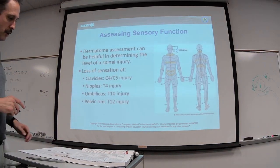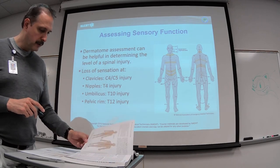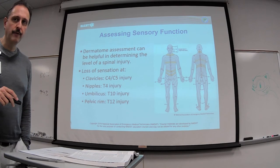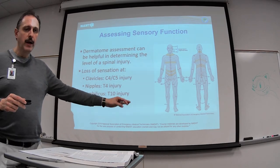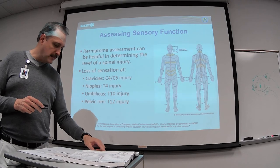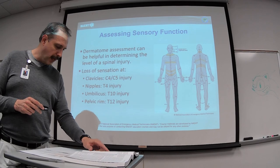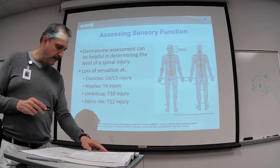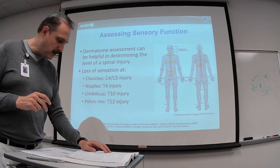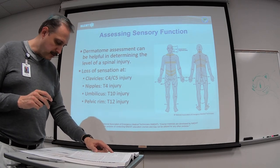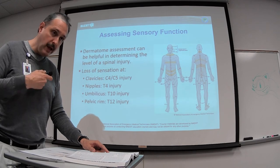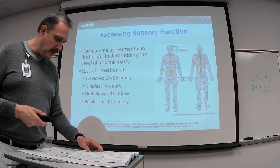Turn to page 300 in your book — the dermatome chart. This chart helps determine where nerve injuries are based on sensation patterns. For example, cardiac patients have pain across the thoracic chest radiating to the middle finger, tracking T3 to T7. For C4-C5 injuries, you're looking at the clavicles. Nipples correspond to T4 — injury there means no feeling from the nipples down.